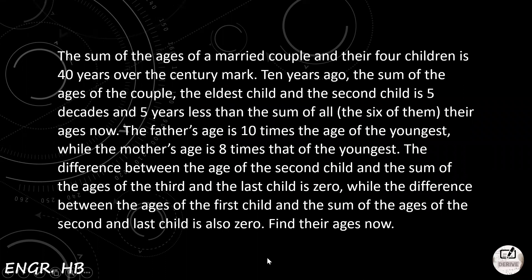The question is: the sum of the ages of a married couple and their four children is 40 years over the century mark. Ten years ago, the sum of the ages of the couple, the eldest child, and the second child is five decades and five years less than the sum of all six of them, their ages now.